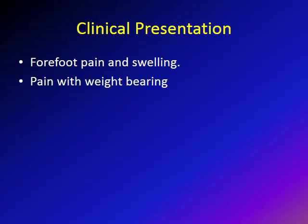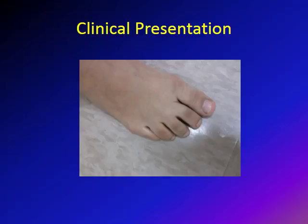The clinical presentation of Freiberg infraction is pain and swelling in the forefoot, localized at the area of the osteochondrosis — in most cases at the second toe. There is also pain with weight-bearing activities. This is the clinical picture of one of my patients: an 11-year-old female with forefoot pain. On examination, there is mild swelling over the base of the third toe, and pressing at the metatarsophalangeal joint causes pain. This is a case affecting the third metatarsal head.